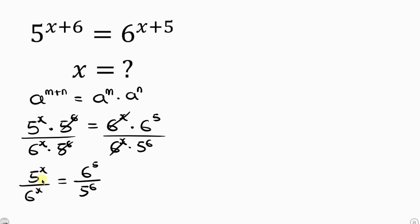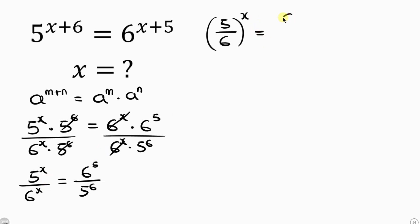From indices, as long as we have the same powers we can group the bases together with a single power. Since the powers are the same, the left side becomes 5 over 6 to the power of x, equal to 6 to the power of 5 divided by 5 to the power of 6.